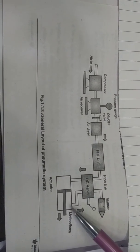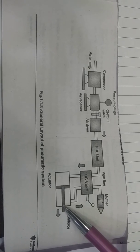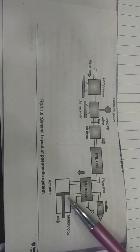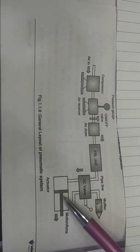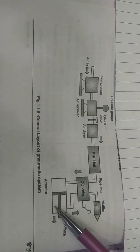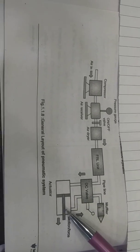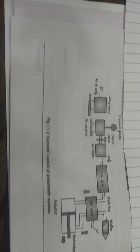The last component is the actuator. This is a linear actuator, and we can obtain the to-and-fro movement of the piston along with the piston rod. This is the layout of the pneumatic system as well as the hydraulic system.